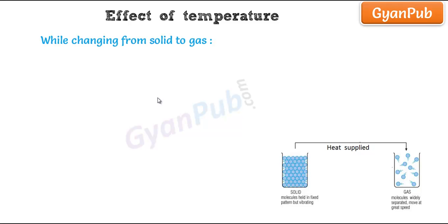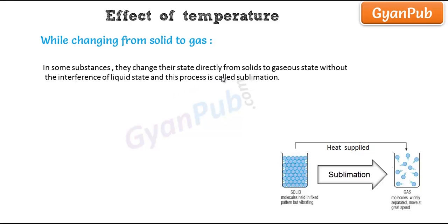Here, the solid is not changing its state to liquid but is changing its state directly from solid to gaseous state. The interference of liquid state is not observed. In some substances, the solid directly changes from solid to gaseous state without the interference of liquid state, and this process is called sublimation.